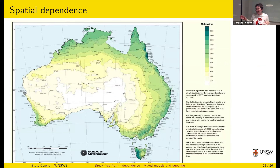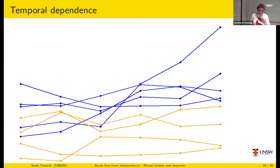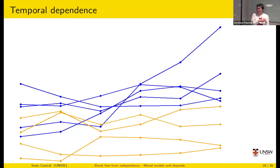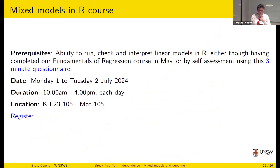You can also model spatial dependence — if you sample anything in space, things close together are more similar than things farther apart because of shared climate, socioeconomic factors, and so on. There's also temporal dependence. In the model we just fitted, we assumed any two observations from the same person are equally similar, but observations closer in time tend to be more similar than those further apart. If you have a long time series you may need to do something extra to account for temporal autocorrelation.